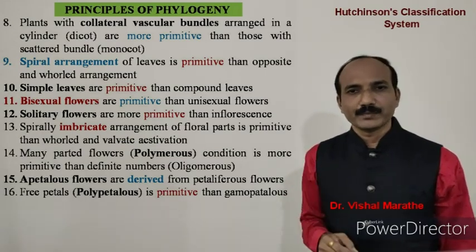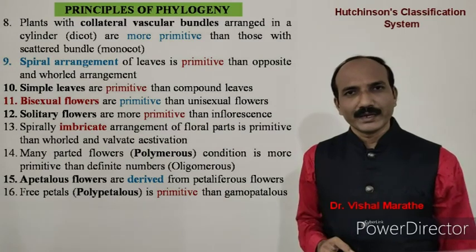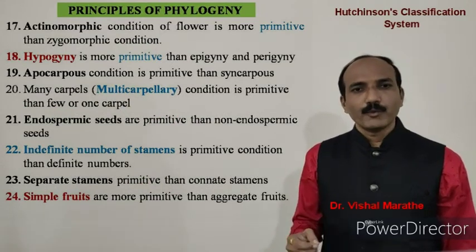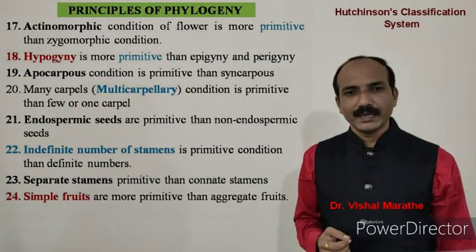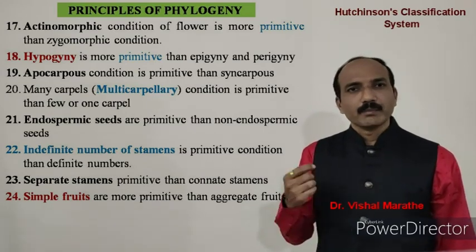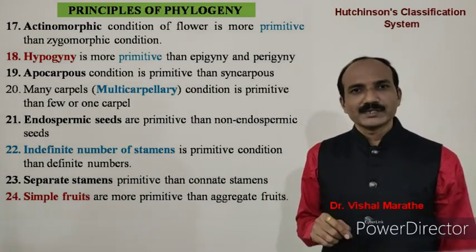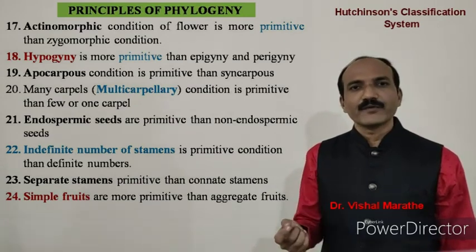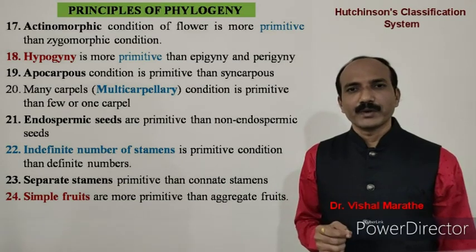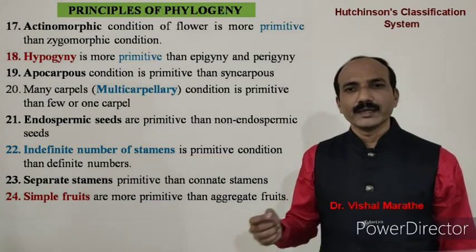Apetalous flowers are derived from petaliferous flowers. Polypetalous condition is more primitive than gamopetalous condition. Actinomorphic condition of a flower is more primitive than zygomorphic condition. Hypogyny is more primitive than epigyny and perigyny. Apocarpous condition is more primitive than syncarpous condition. Many carpels, that is the multicarpellary condition, is more primitive than few or one carpel. Endospermic seeds are more primitive than non-endospermic seeds. Indefinite number of stamens is a more primitive condition than a definite number. Separate stamens are more primitive than connate stamens. The 24th principle states that simple fruits are more primitive than aggregate fruits.